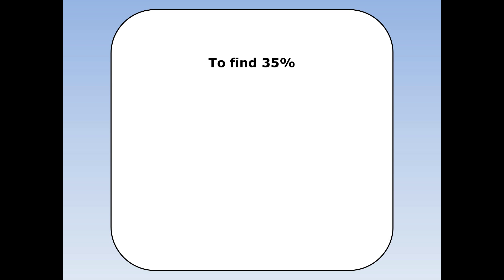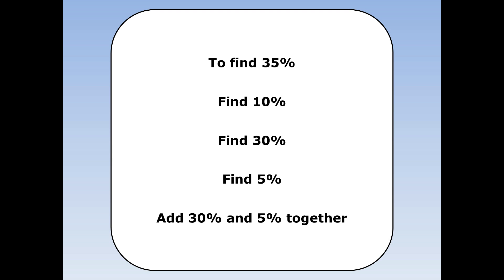To find 35% of something, first find 10%, then find 30%, then find 5%, then add 30% and 5% together.